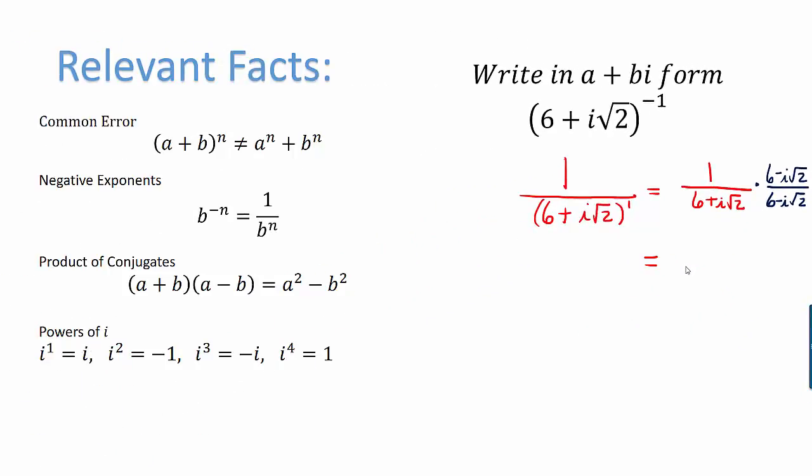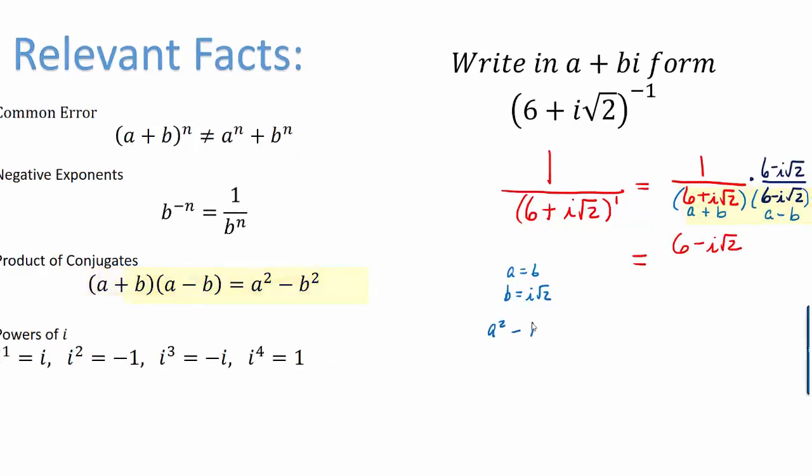When we multiply fractions, we multiply straight across. So in the numerator, we have 1 times 6 minus i root 2 which will just give us 6 minus i root 2. In the denominator, we have a product of conjugates. You can multiply this out by foiling or you can remember that it fits the pattern of a plus b and a minus b where a is the number 6 and b is the number i root 2. We know that a plus b times a minus b fits the pattern of a squared minus b squared.